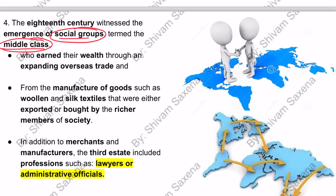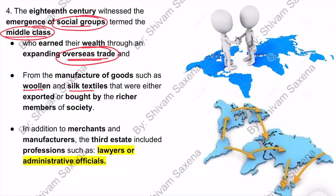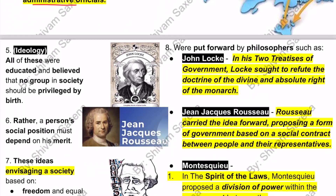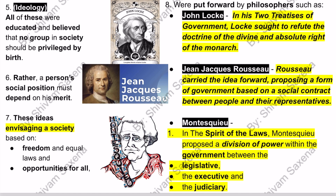A question arises: if everyone in the third state was poor, how did these people become wealthy? These middle class people generated wealth through overseas trade — trading from one area to another, continent to continent — increasing their income. The newly prosperous section of the third state wasn't only merchants and manufacturers; professionals also emerged, such as lawyers and administrative officials, since lawyers play an important role in trade and legal agreements. As demand for such jobs grew, these officials emerged and joined the educated middle class.